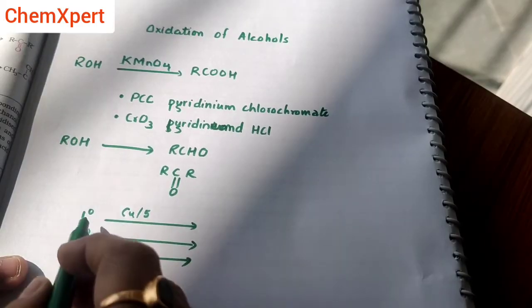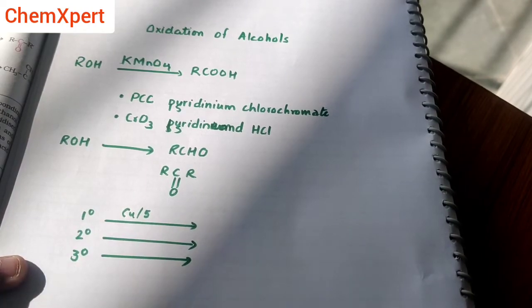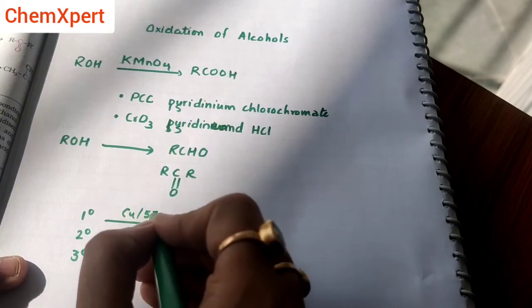One more important reagent that causes the oxidation of primary, secondary, and tertiary alcohol is copper at 573 Kelvin.